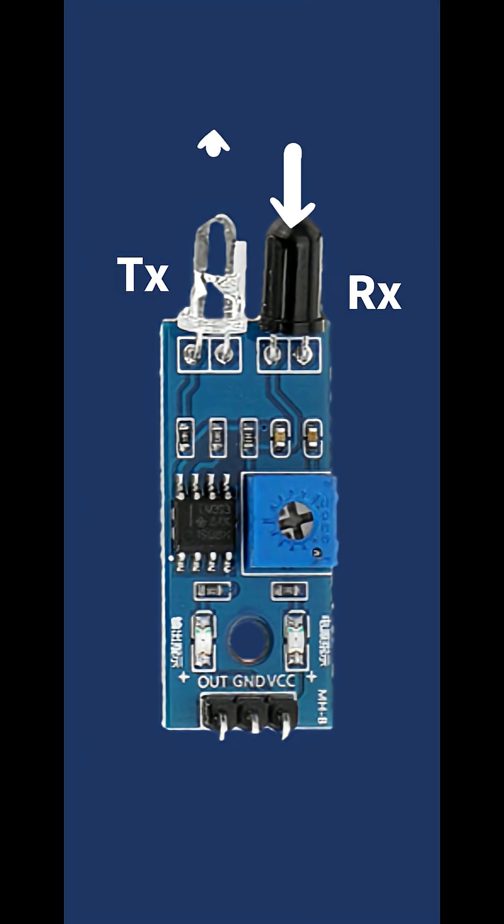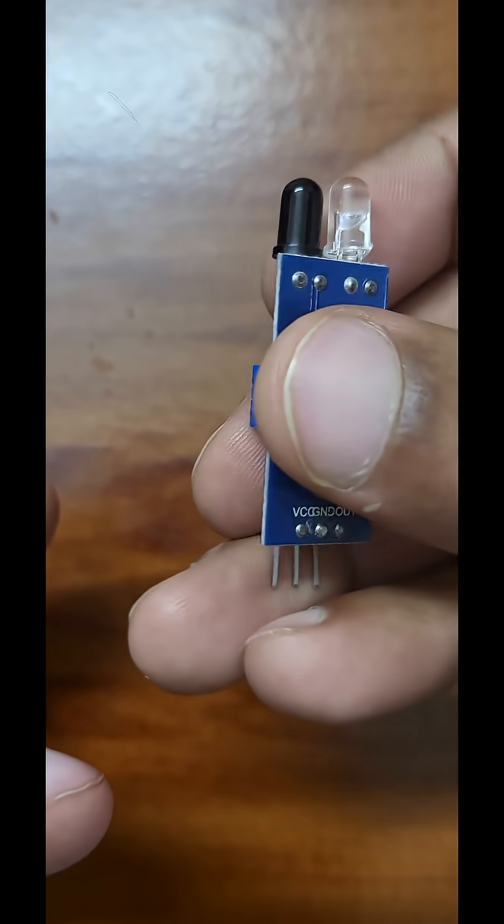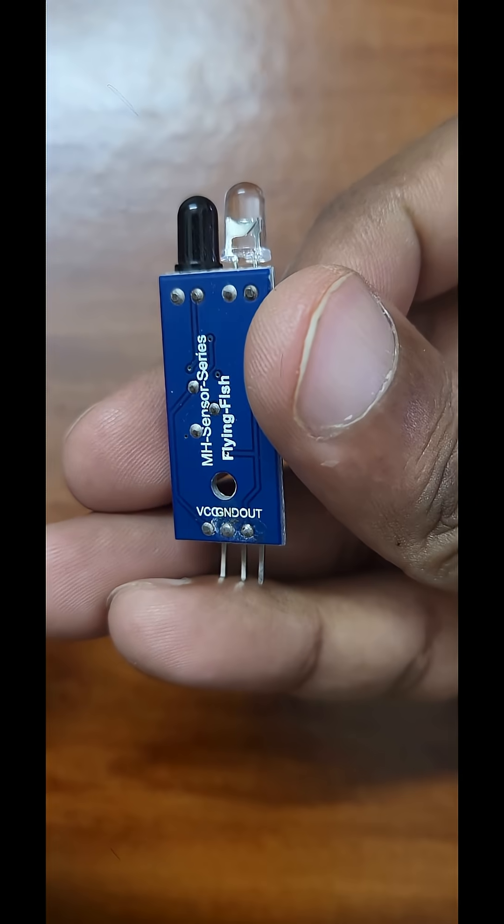Here's the core idea. The IR LED continuously emits infrared light. When an object comes close, this IR light reflects back and hits the photodiode. This changes its resistance.